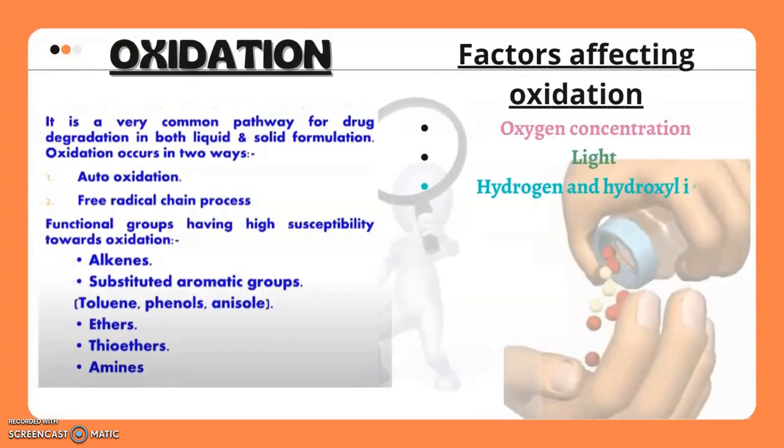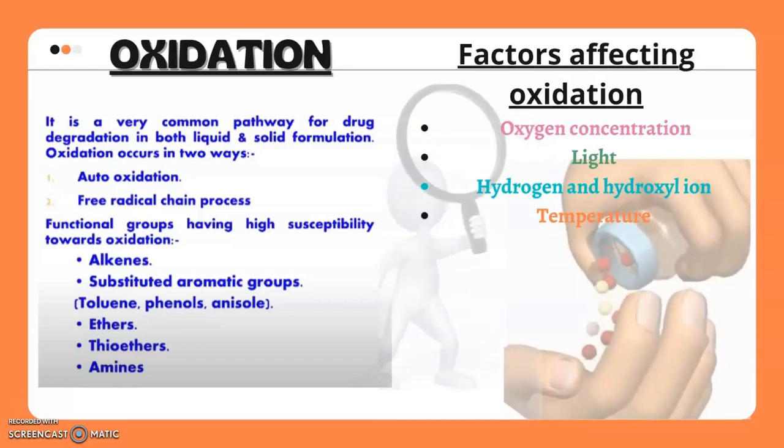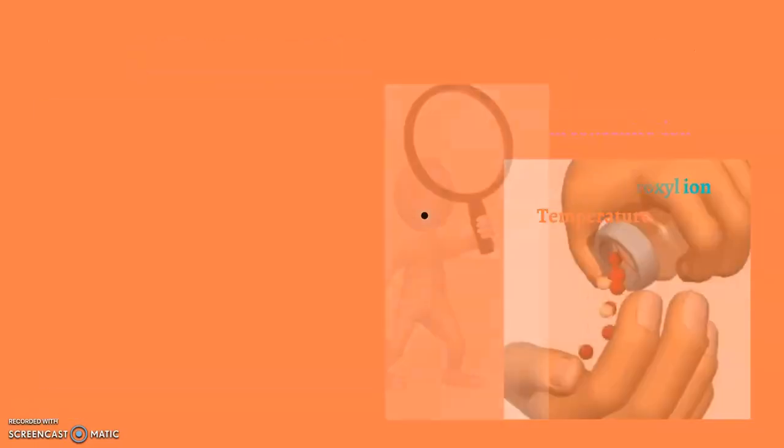Another chemical property is oxidation. It is a very common pathway for drug degradation in both liquid and solid formulation. Oxidation occurs in two ways: auto-oxidation and free radical chain process. Functional groups having high susceptibility towards oxidation are alkenes, substituted aromatic groups (toluene), phenols, anisole, ethers, thioethers and amines. The factors affecting oxidation are oxygen concentration, light, hydrogen and hydroxyl ion concentration, and temperature.